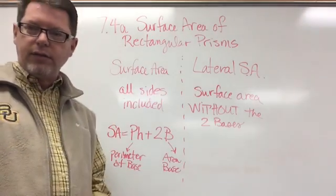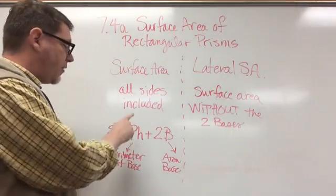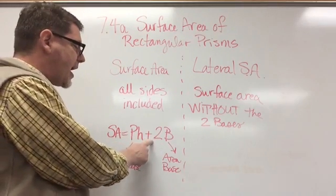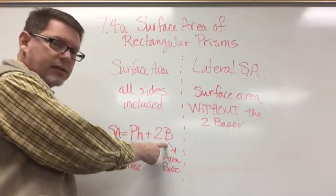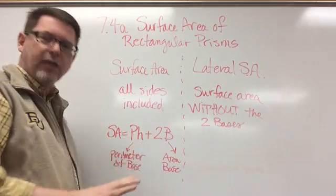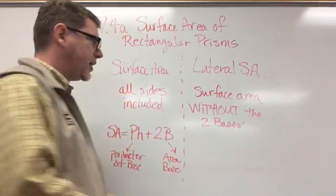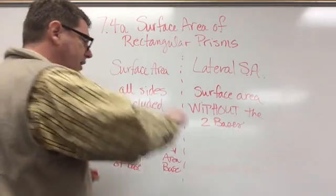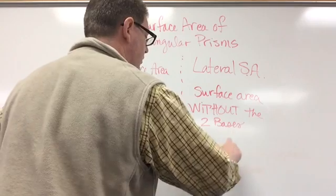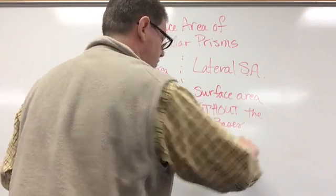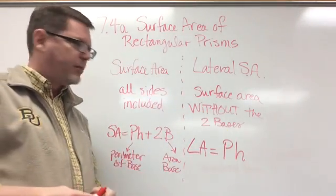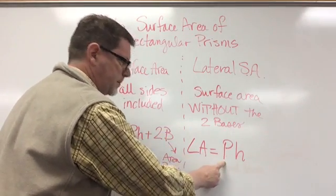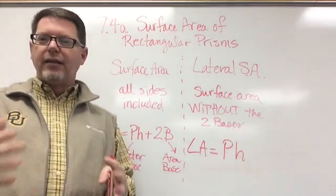And since it's a rectangle, you would do length times width. So in order to find the total surface area, I find the perimeter of the base and multiply that by the height, then add two of the areas of the bases. Now for lateral surface area, since lateral surface area is the surface area without the two bases, lateral area equals capital PH — just capital PH. All I have to do is find the perimeter of the base and multiply it by the height.